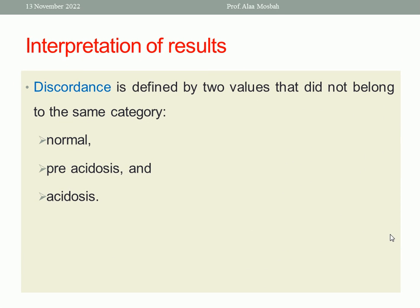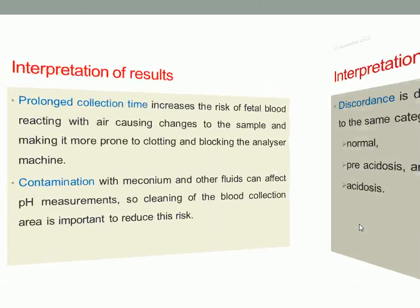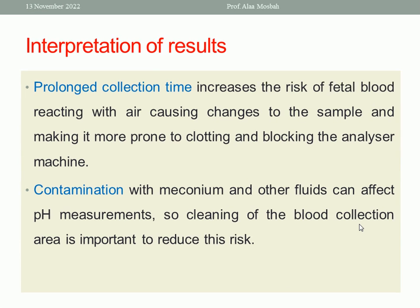So what if we have discordance? What is discordance? Two values don't belong to the same category — pH is not in agreement with lactate; one of them is normal and the other is pre-acidosis or acidosis. So there is discordance, a disagreement. We should repeat and take the measurements again in a proper way.